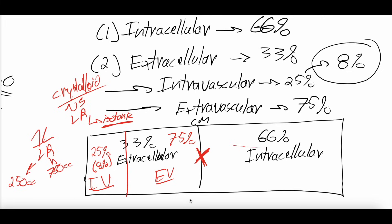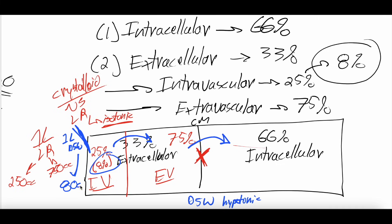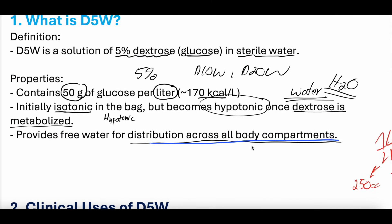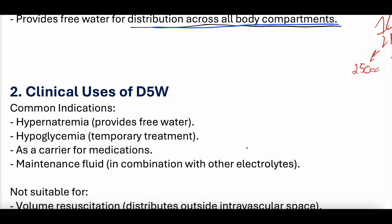But D5W is hypotonic after that glucose is metabolized. Since it's hypotonic, it will actually cross into cells. You give one liter of D5W into the intravascular space — it equilibrates with both the extravascular space and the intracellular space. That means only 8%, or about 80 cc, stays intravascular, because it equates throughout all spaces including the huge intracellular space. This is why D5W distributes across all body compartments and is not a resuscitative fluid — very little stays in the intravascular space.